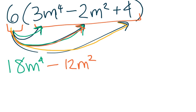I'm going to multiply 6 times this final term over here, 6 times positive 4, that gives me plus 24.